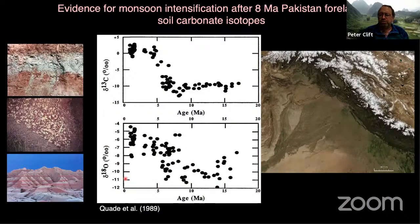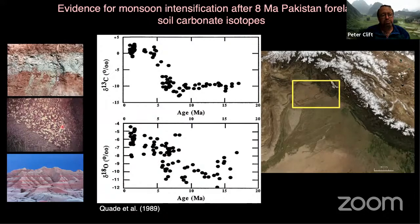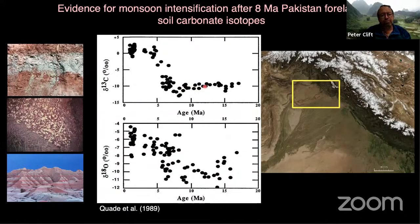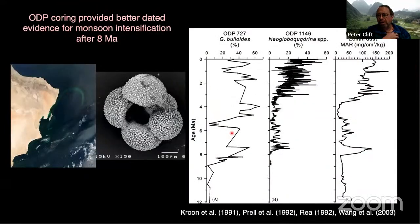What do we know about the monsoon's history? Using stable isotopes in the Potwar Plateau region of northern Pakistan, we saw a change in isotopic character in paleosols and calcretes using carbon and oxygen isotopes. This relates to rainfall and particularly to a shift from woody C3 vegetation to more C4-dominated grassland. In the northwest Himalaya this starts around 8 million years ago and correlates with marine records, particularly data from Dick Croon and colleagues following drilling offshore the Oman margin.